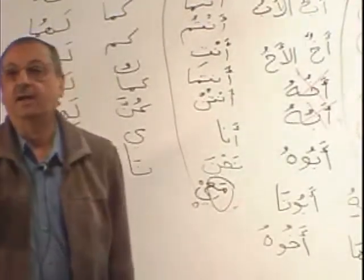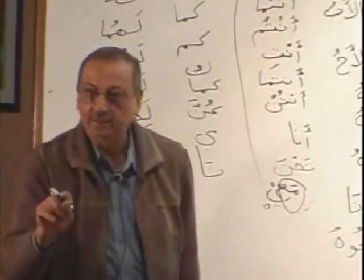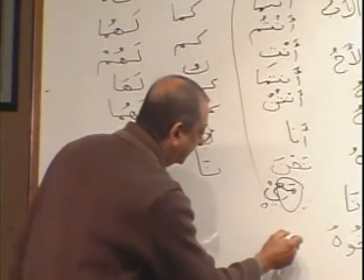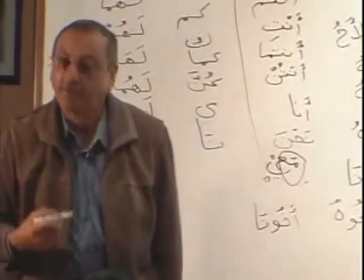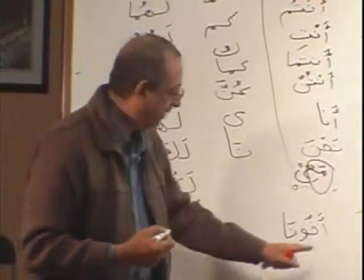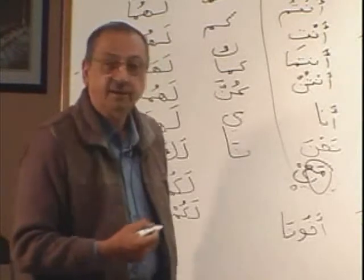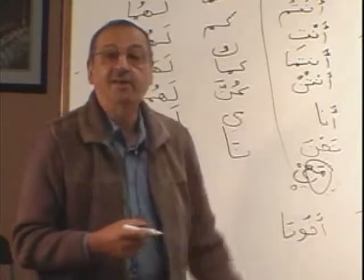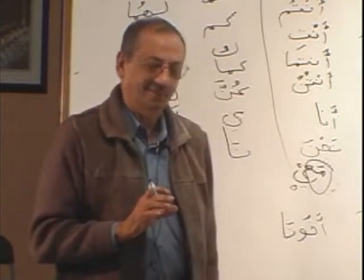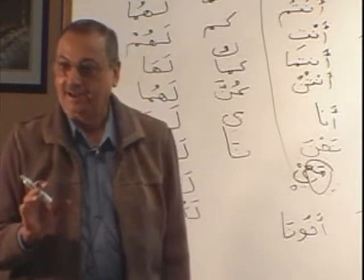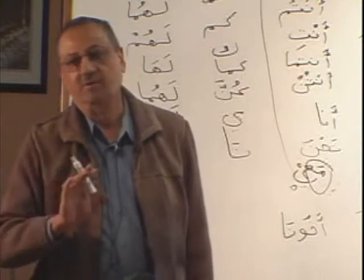If you say ahuha — her brother — ahuhu, ahuka, ahuki, ahuna. How will you translate ahuna? Our brother. And brother ahu is mudaf, then mudafili. This waw only comes when ahu and abu come as a mudaf.